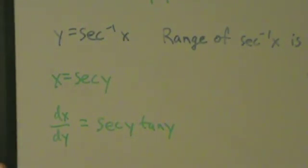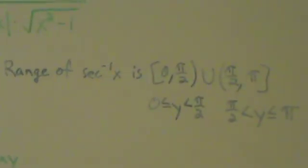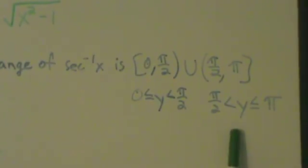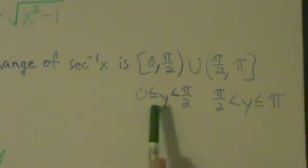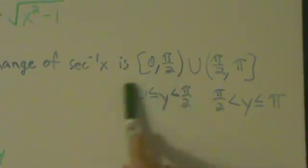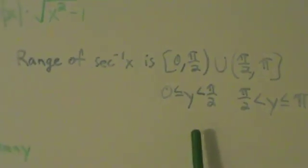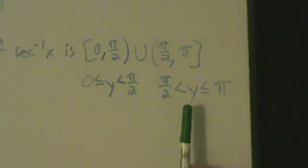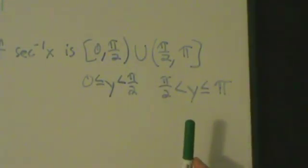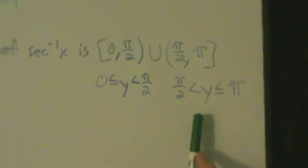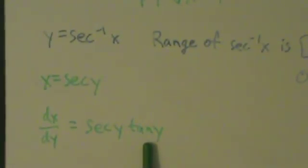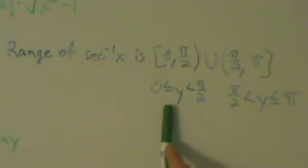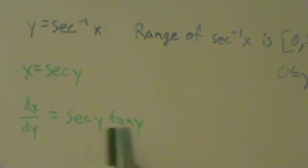Now we're going to do some algebraic manipulations. We note that y is between 0 and pi over 2 (quadrant 1) or between pi over 2 and pi (quadrant 2). In quadrant 1, secant y and tangent y are both positive, so their product is positive. In quadrant 2, secant y and tangent y are both negative, so their product is again positive. If y equals 0 then tangent y is 0, and if y equals pi then tangent of pi is also 0, but that's okay.